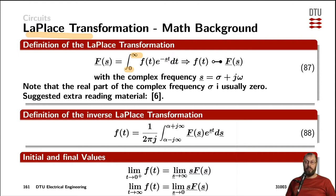Furthermore, in the Laplace transformation we multiply the original function in the time domain f(t) with an exponential function where the argument is minus the complex frequency s multiplied with time t. We integrate over t and get the same function in the frequency domain, represented by an uppercase letter with an underscore indicating it's complex. And again we have the complex frequency s, which has a real part sigma plus j*omega, where omega is the angular frequency.